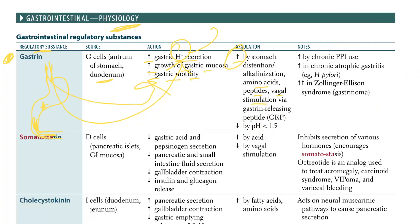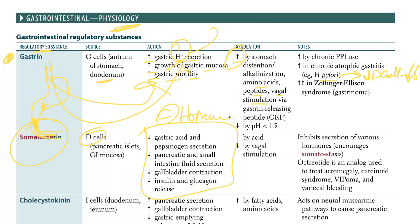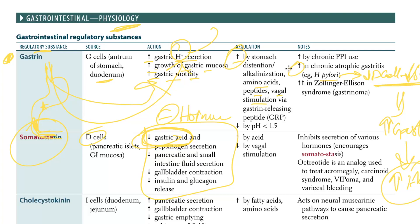Gastrin is also increased in chronic atrophic gastritis - for example due to H. pylori. H. pylori uses a different mechanism: it decreases the D cells, which secrete somatostatin. Somatostatin inhibits all hormones, so when H. pylori decreases somatostatin, that indirectly causes increased gastrin, because gastrin no longer has somatostatin suppressing it.